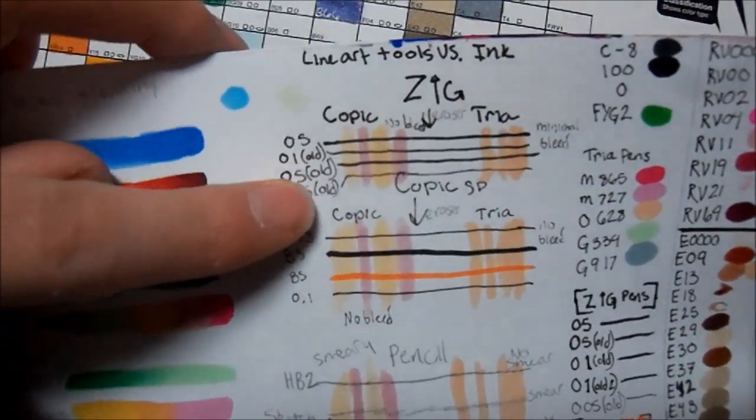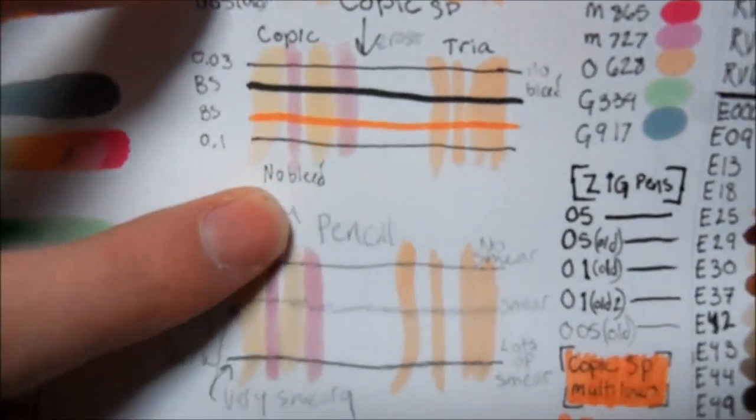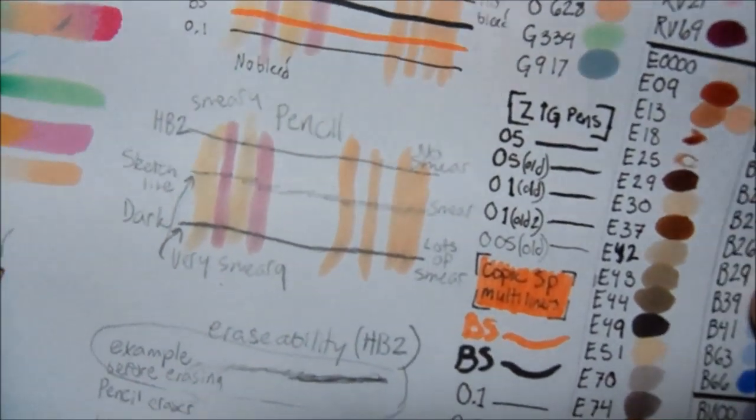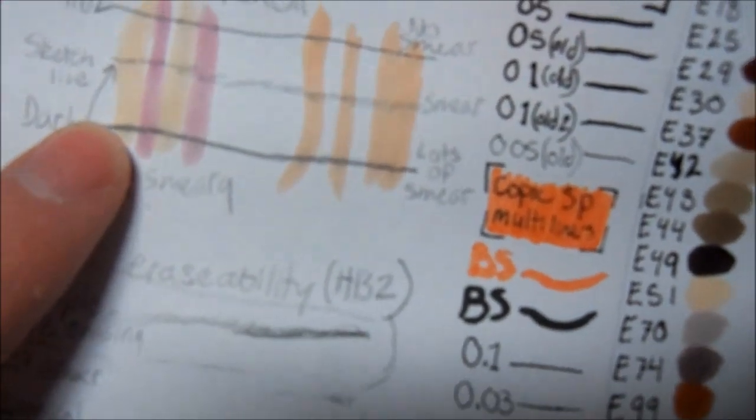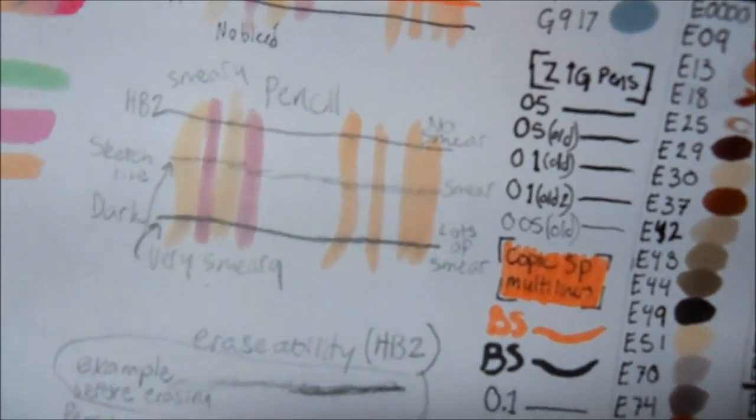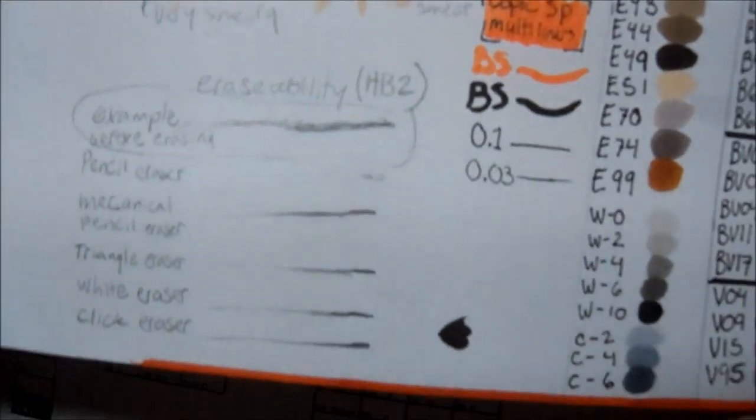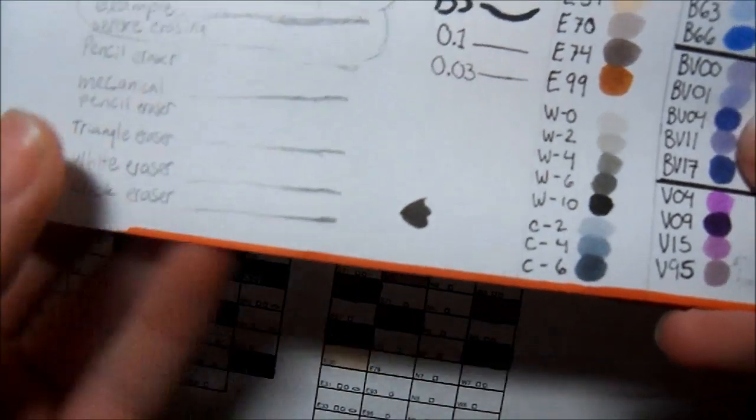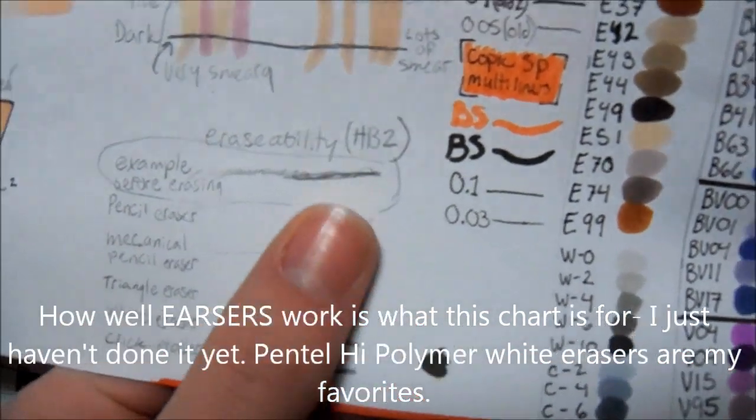Like for instance, this is testing the different ink pens that I use on this paper because sometimes ink pens will work on one paper and not on another. Seeing how much these two different kinds of markers I use bleed with pencil and then how well pencils erase. I haven't tested this part yet.